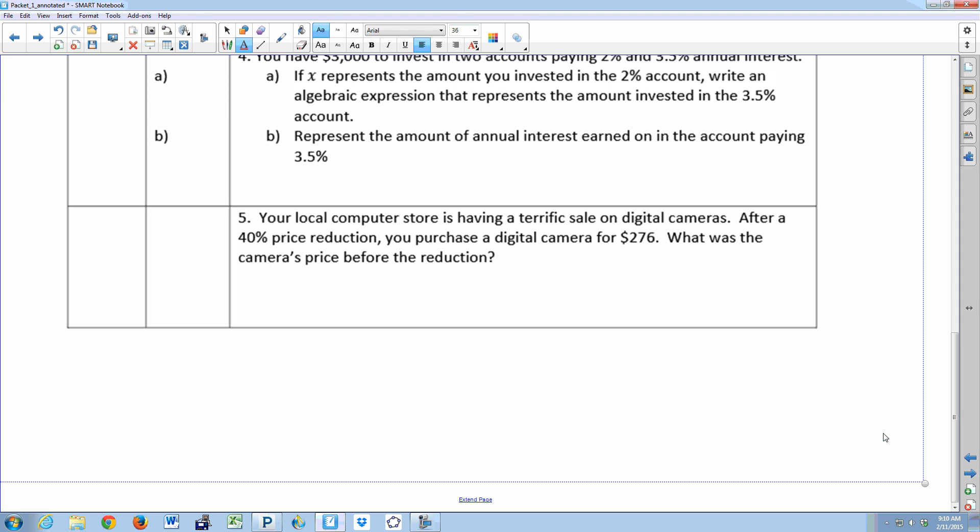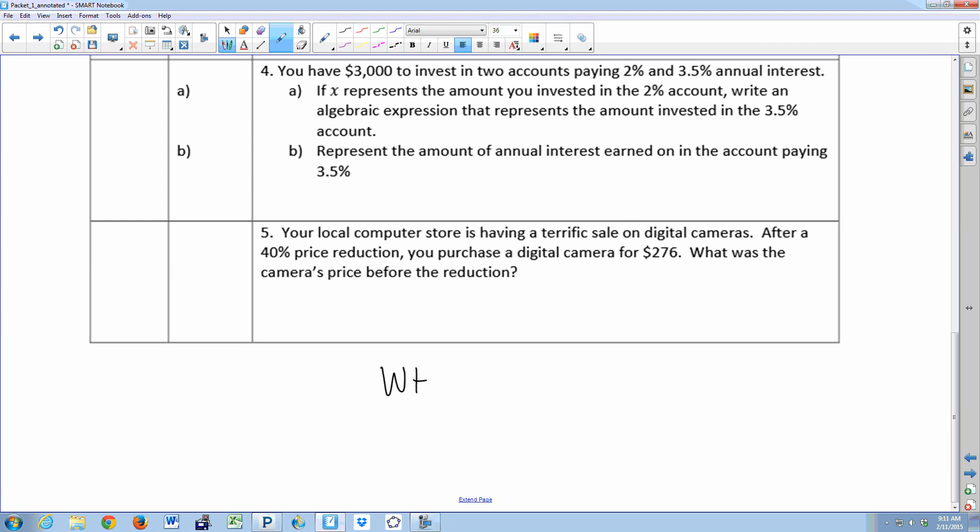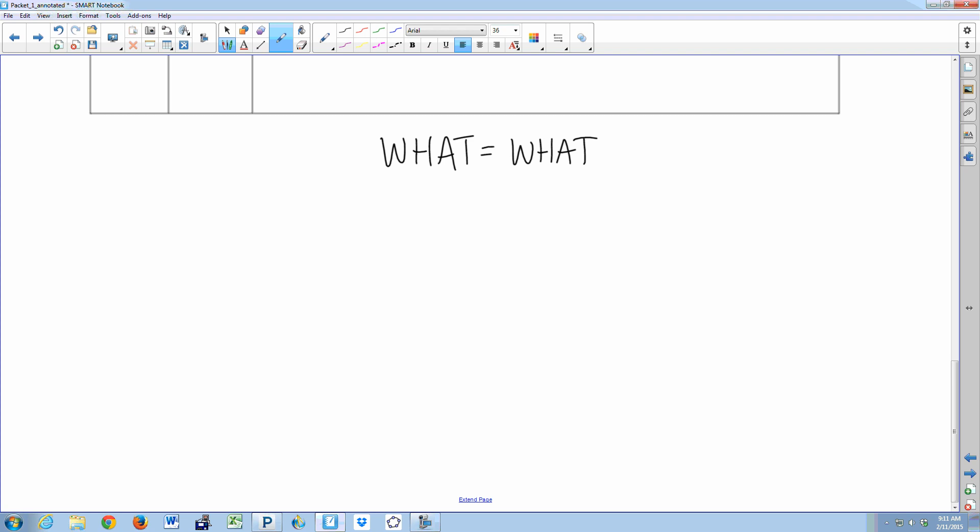Your local computer store is having a terrific sale on digital cameras. After a 40% price reduction, you purchase a digital camera that costs $276. When you do these types of problems and you're asked to find the original price of the camera, this is how I always phrase it: You have to find an equality. To solve an equation, you have to find an equality in all of those words that they just threw at you. Try to stay a little focused here because I'm not going to do much demo today.